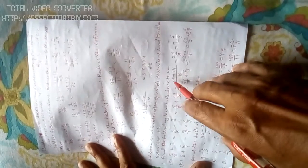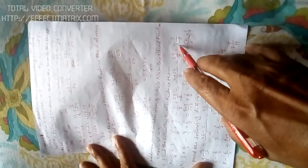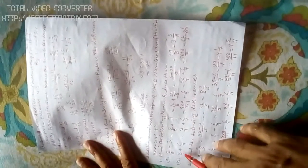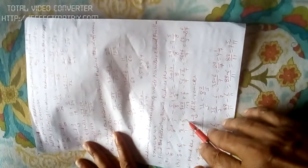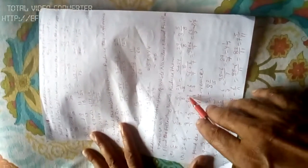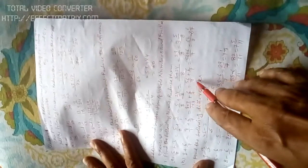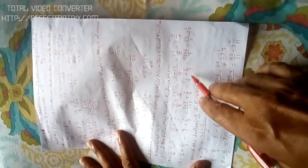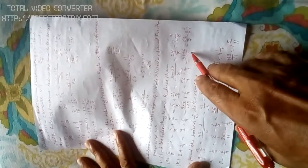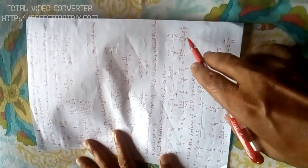5 plus 24 equals 29 by 8, in mixed fraction 3 and 5 by 8. Problem H: 8 plus 6 by 7 equals 8 by 1 plus 6 by 7. To make same denominator, multiply by 7: 8 into 7 by 1 into 7 equals 56 by 7 plus 6 by 7. Denominator is 7, numerator is 56 plus 6 equals 62 by 7, which is 8 and 6 by 7.